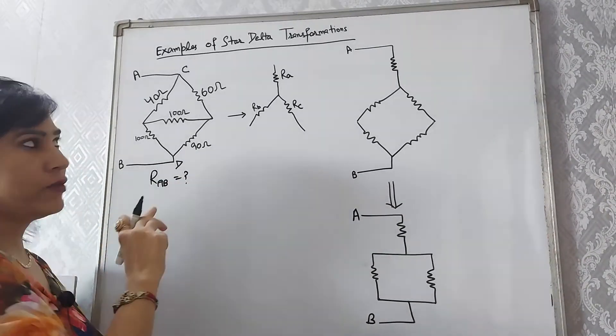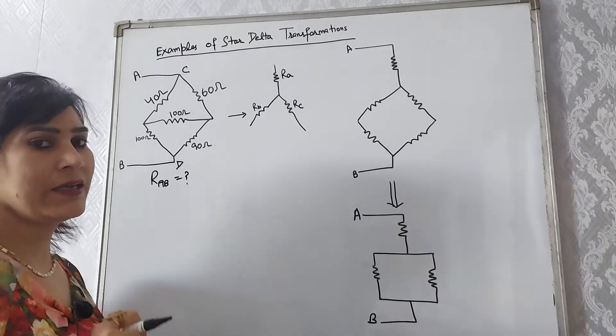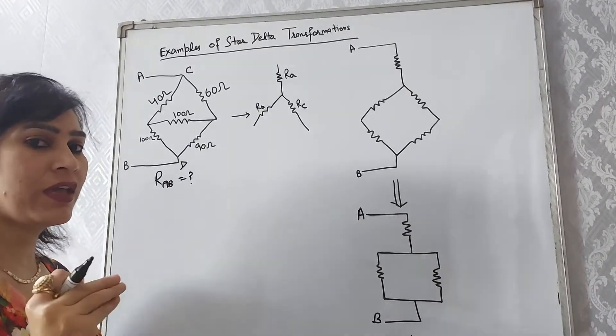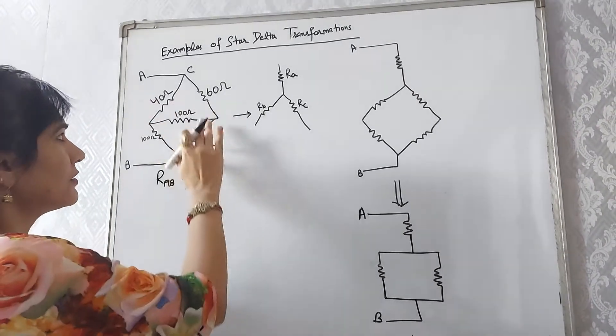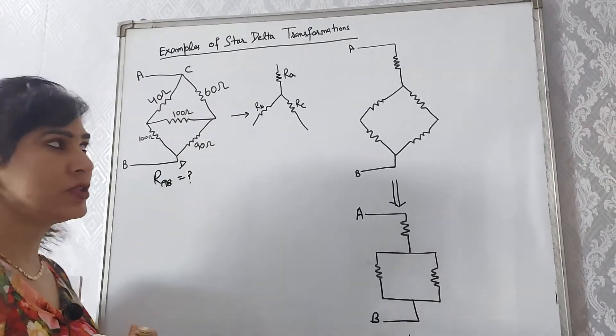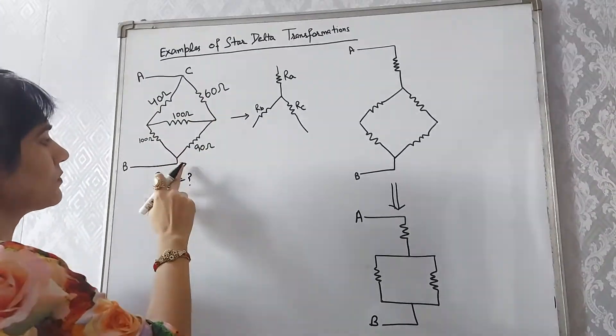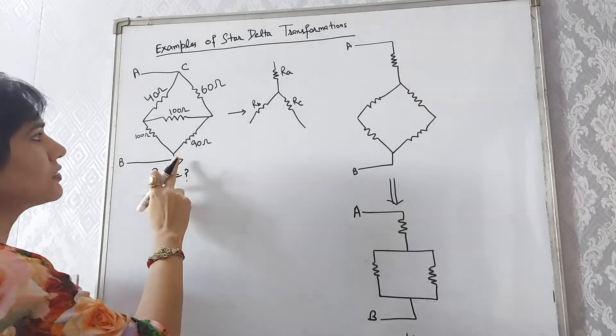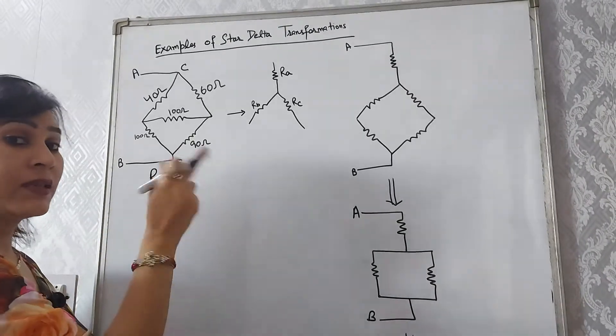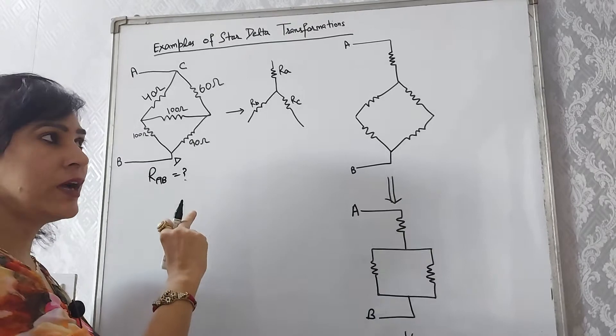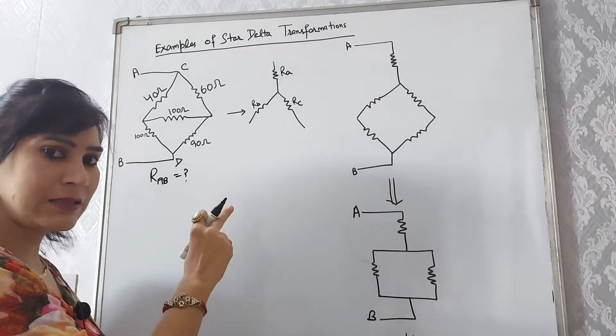First of all when we have to solve the star delta network, first we check whether there is any series parallel combination. We are looking for series parallel combination. Look into the circuit, there is no series parallel combination. Then second step, move to the star or delta search.